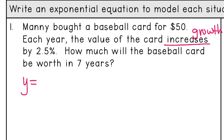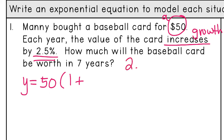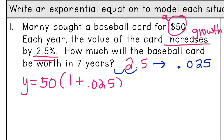So let's start with our equation: y equals — a stands for the initial value, so the baseball card was worth fifty dollars to start, so that's my a. Since we said it was growth we're going to have one plus r. Our rate is 2.5 percent, but you have to change that into a regular decimal by moving the decimal place twice, so 2.5% becomes 0.025. Adding those together gives us fifty times 1.025 to the x power.